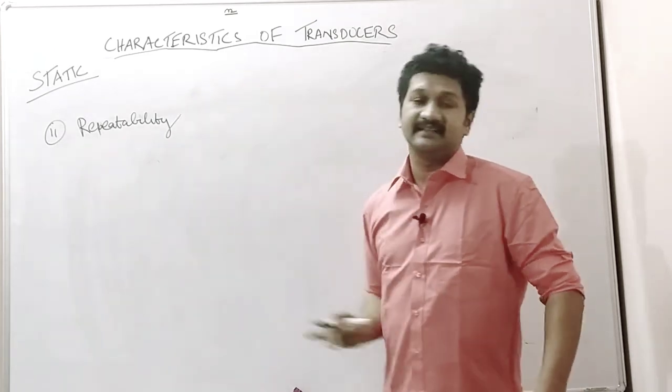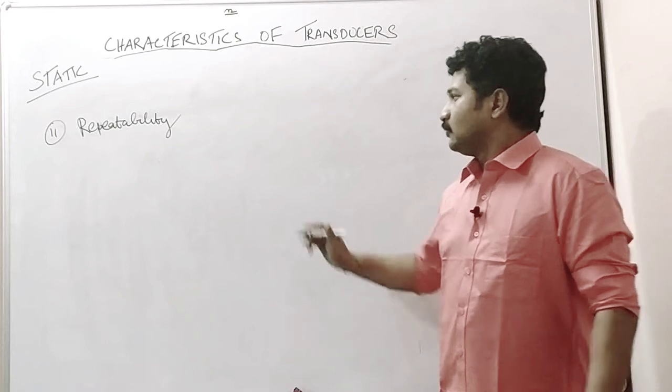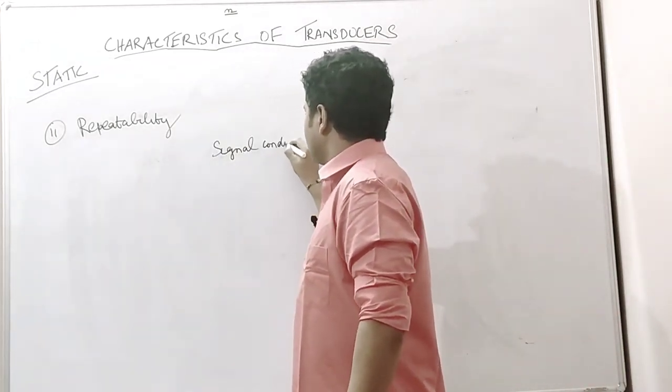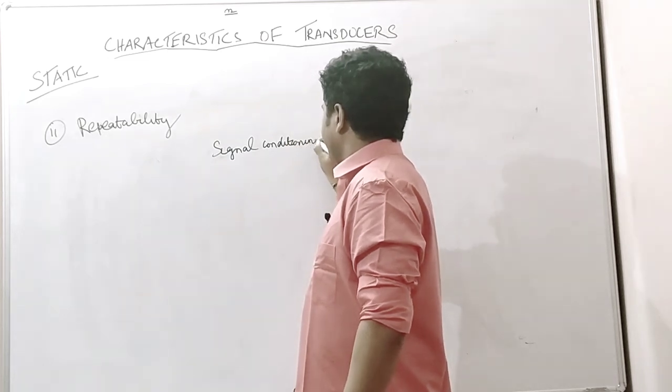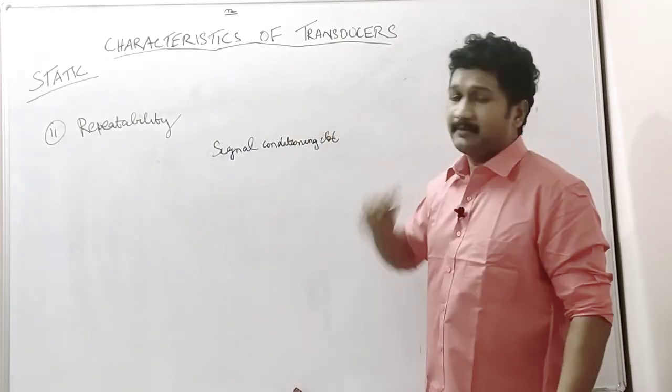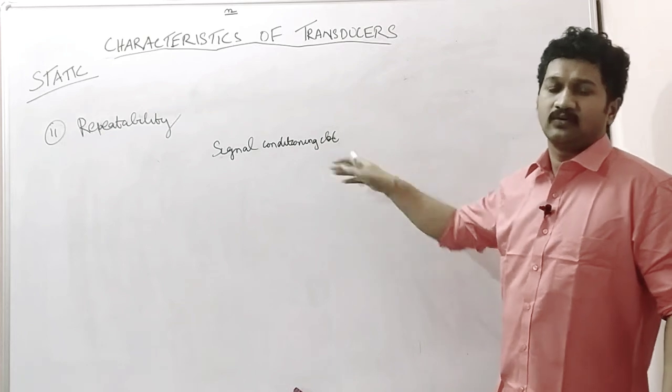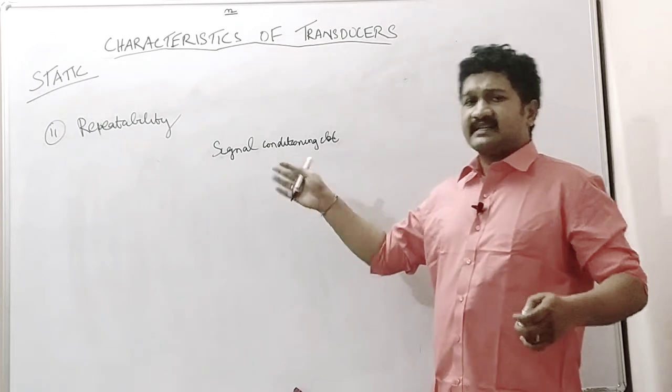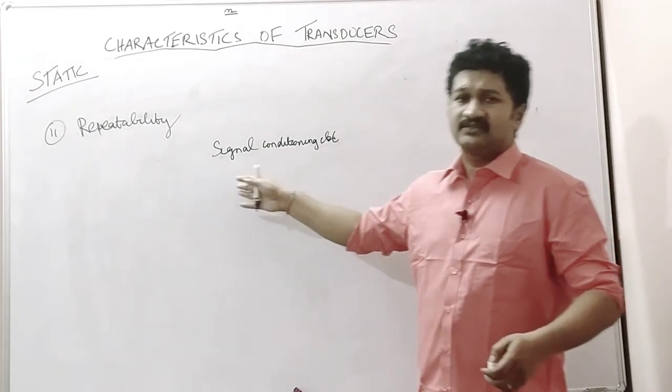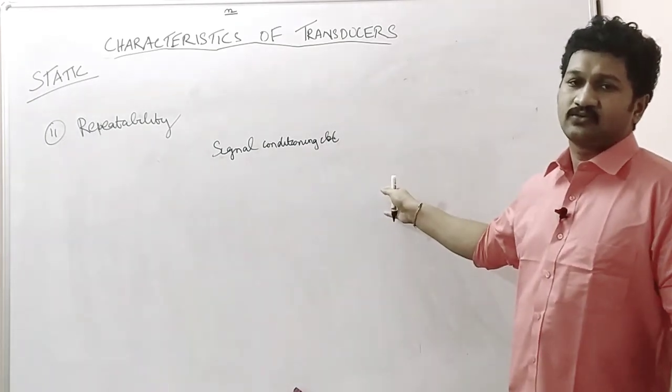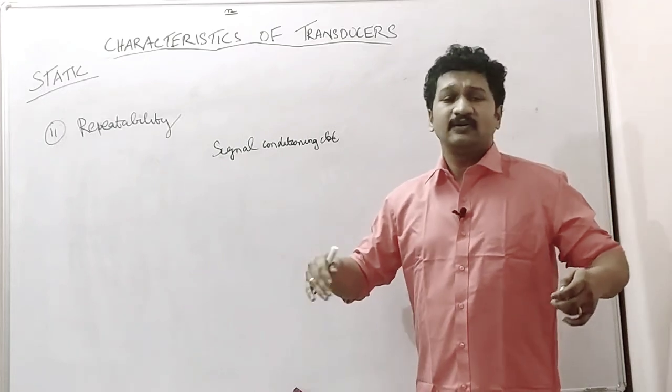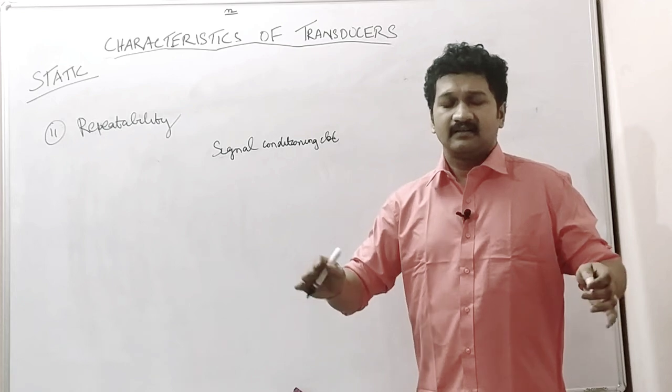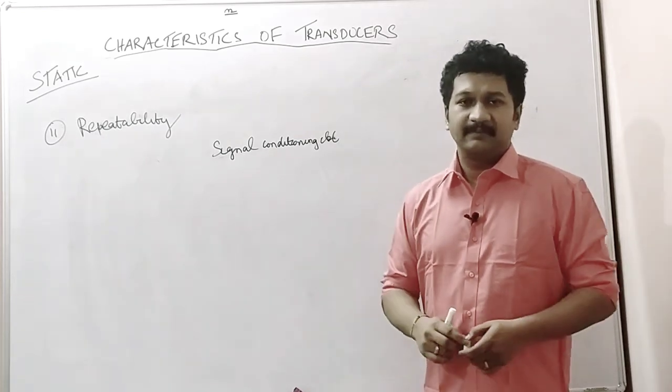For example, you have a signal conditioning circuit. You are conducting an experiment with the signal conditioning circuit, let's say a Wheatstone bridge. You conduct this experiment getting the output voltage from the Wheatstone bridge in your laboratory, which has normal ambient temperature and pressure conditions. You get some set of outputs.